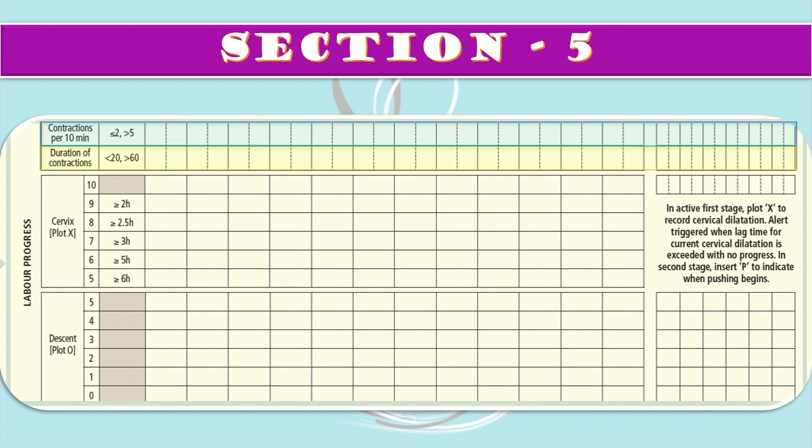For the duration of contractions, if contractions last more than 20 and less than 60 seconds, assess every 30 minutes during the first stage and every five minutes during the second stage. Actions are required if contractions are less than 20 seconds or more than 60 seconds.